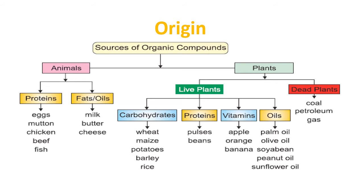We can get organic compounds from plants and animals. Animals will give you proteins and oils or fats. The sources of proteins include eggs, mutton, chicken, beef and fish — all types of meat give you protein. For fats and oils, the sources are milk, butter and cheese.